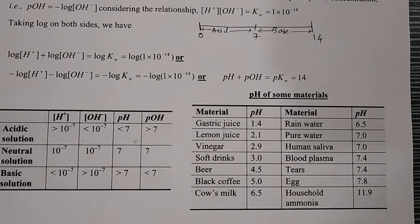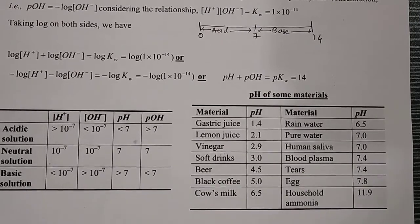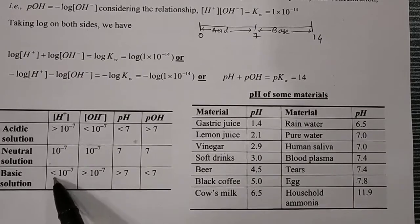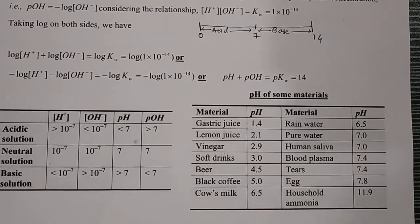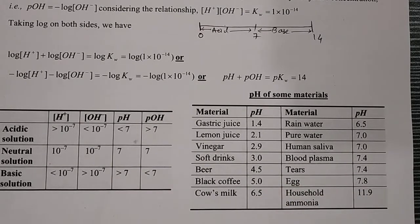In a neutral solution, pH is 7, [H+] = 10⁻⁷, [OH−] = 10⁻⁷, and pOH is also 7. In a basic solution, [H+] is less than 10⁻⁷, [OH−] is greater than 10⁻⁷ since it is a basic solution, pH is greater than 7, and pOH is less than 7.